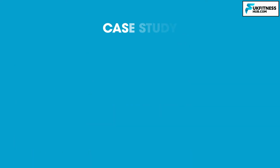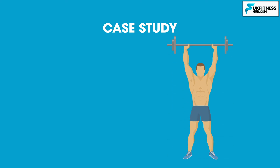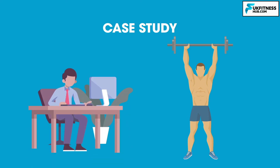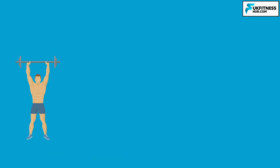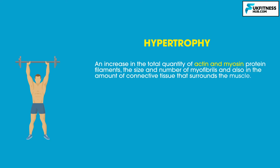To finish this episode, we are going to take a look at a case study. What would we expect the neuromuscular adaptations of a bodybuilder to be in comparison to a desk worker that has never trained? Firstly, the bodybuilder would be training for muscular hypertrophy. This means we can expect an increase in the total quantity of actin and myosin protein filaments, the size and number of myofibrils, and also the amount of connective tissue that surrounds the muscle.